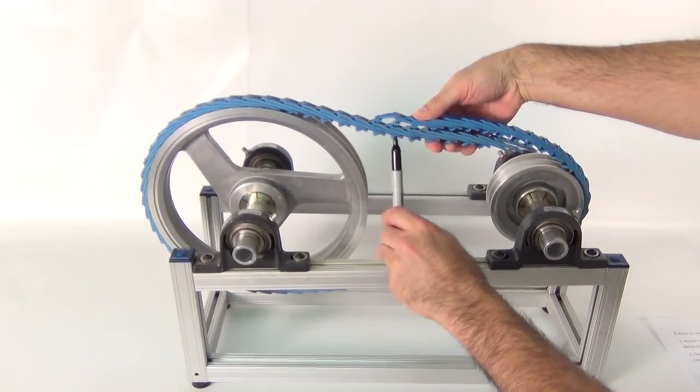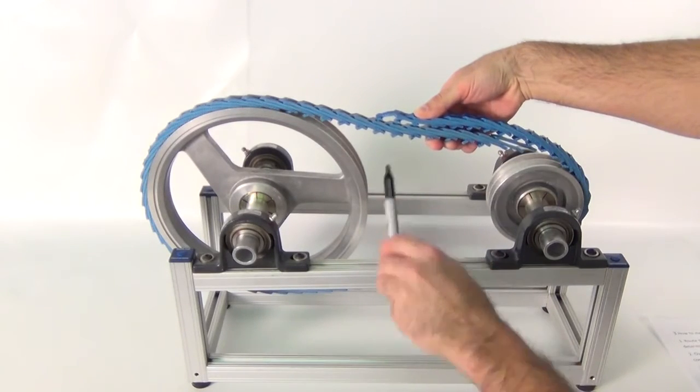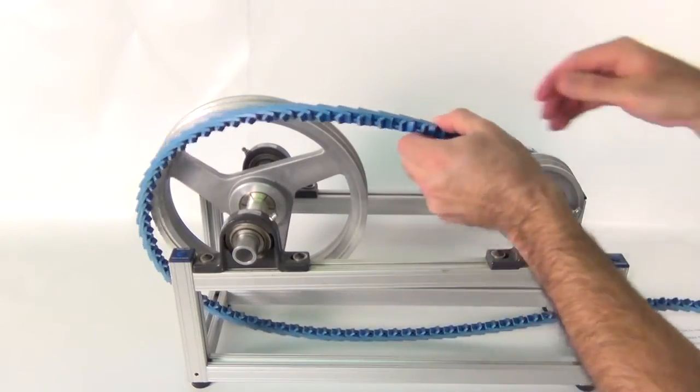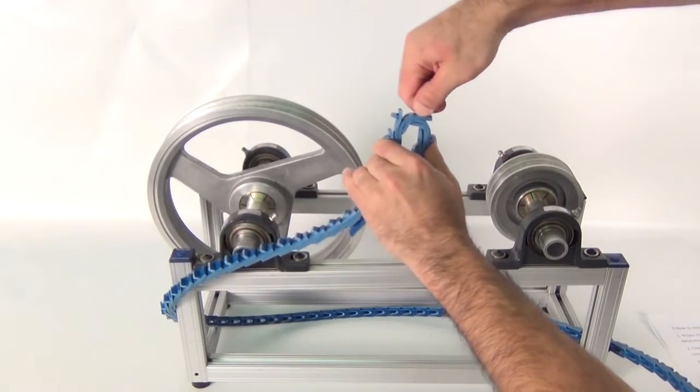It is recommended to mark the belt with a pen to assure the proper links are removed. Disassemble the belt, removing the marked tabs.